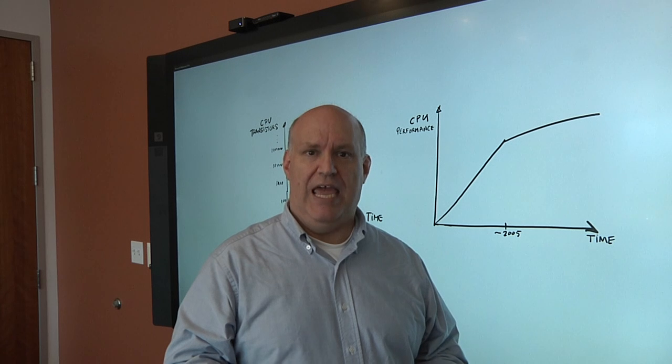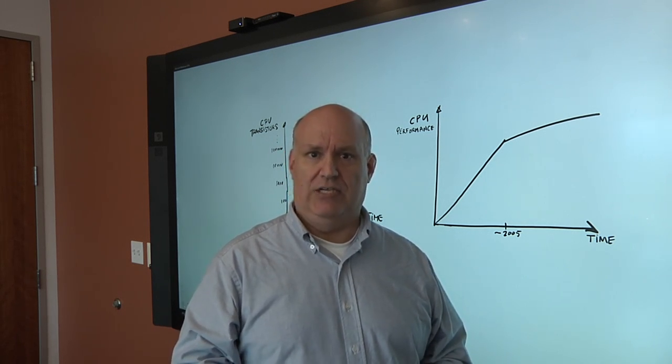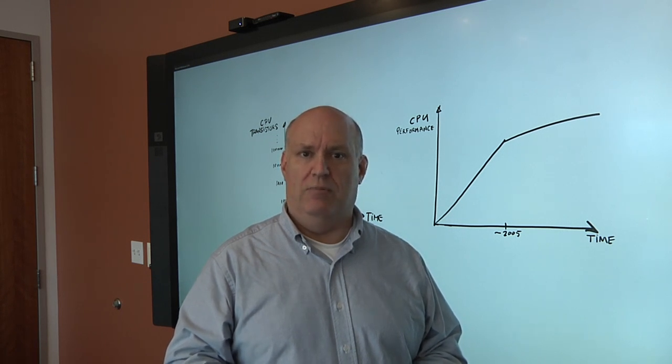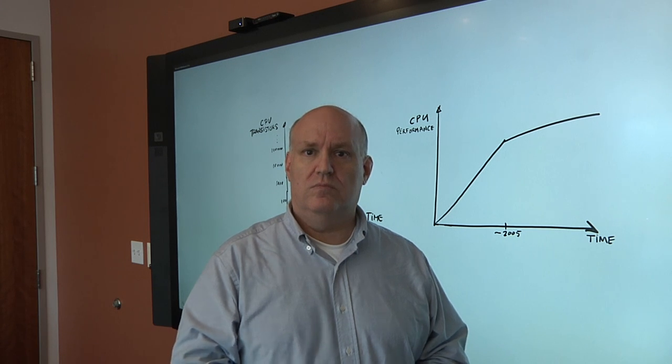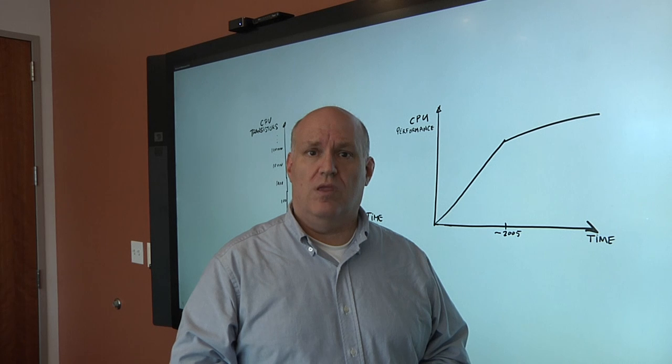Rather than saying that branch prediction was insecure, because it wasn't, or saying that the cache was insecure, it was really the interaction between these two complex pieces that led to the security vulnerability. And security has to be thought of as an ongoing, you have to plug holes as you go, right? Because people are always going to come up with better and better methods of getting in.